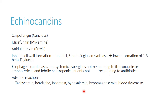As far as side effects, echinocandins are pretty well tolerated overall. They won't be nearly as bad as amphotericin B, which we like to avoid because it causes a lot of renal damage and electrolyte wasting. With echinocandins, electrolyte disturbances are much milder, but hypokalemia and hypomagnesemia are possible.